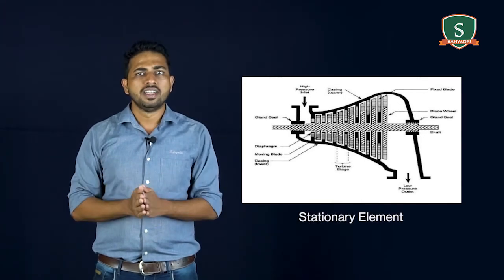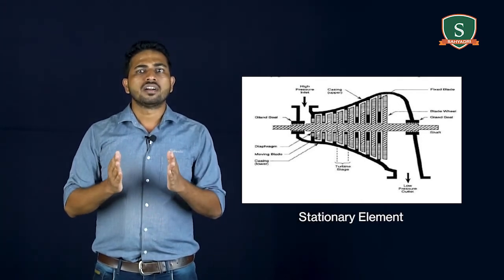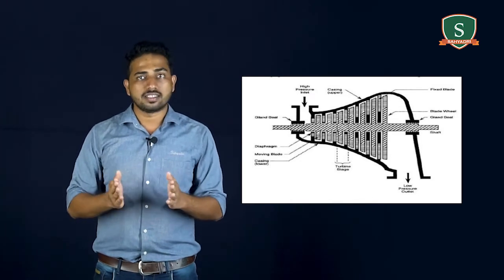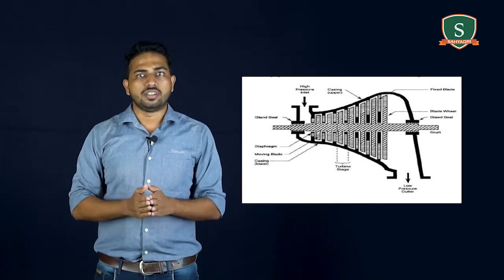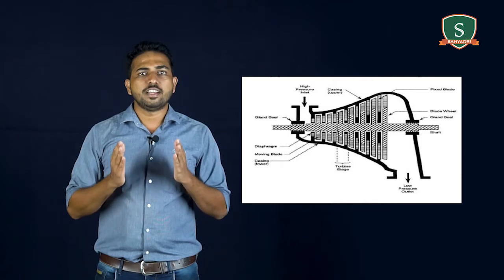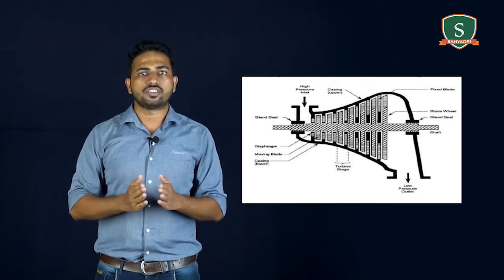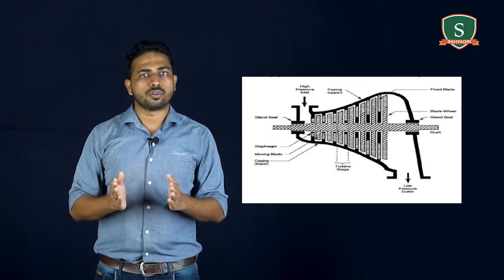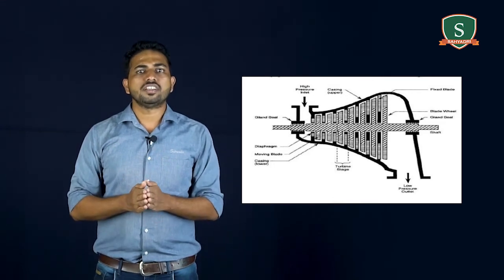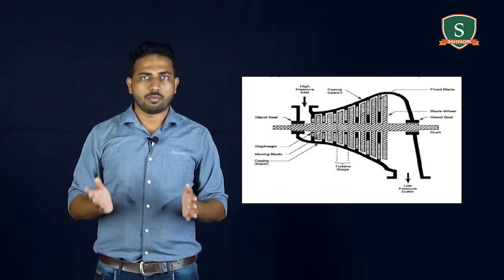Next, stationary element. Stationary element may be called guide blades or nozzle depending on the particular machine. It acts as a guiding part for the proper control of flow direction and the energy conversion process. Stationary element is not a compulsory part of every turbo machine.